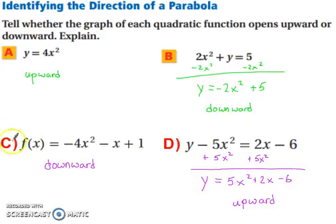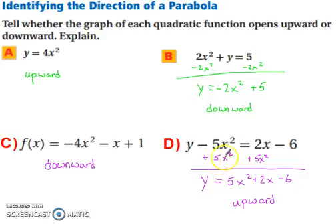In part c, the a value is negative, so it opens downward. And in part d, the a value is positive, so it opens upward.